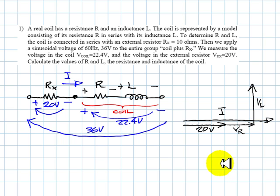If we add together these two voltages, this one has to be the voltage in the coil. If we add together the three voltages, this one, that is the entire voltage of the group. So we know this is 36 volts. And we know that this is 22.4 volts.